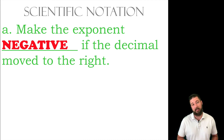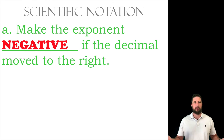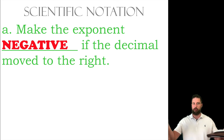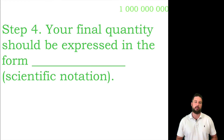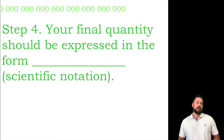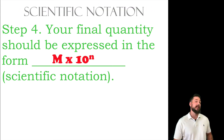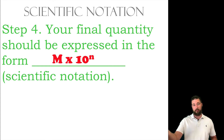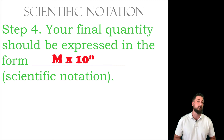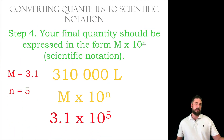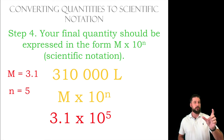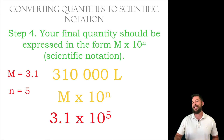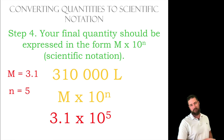The way to think about it: if you have a big number like six billion, it's going to be a positive exponent. But if you have a very small number like .000028, it's going to be a negative exponent. Your final quantity should be expressed as the coefficient multiplied by ten to the power of how many times you moved it. In this situation it's going to be 3.1 — our coefficient — multiplied by ten to the five, because we moved the decimal five times.